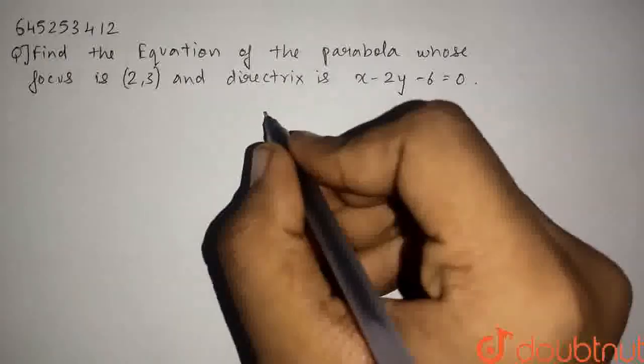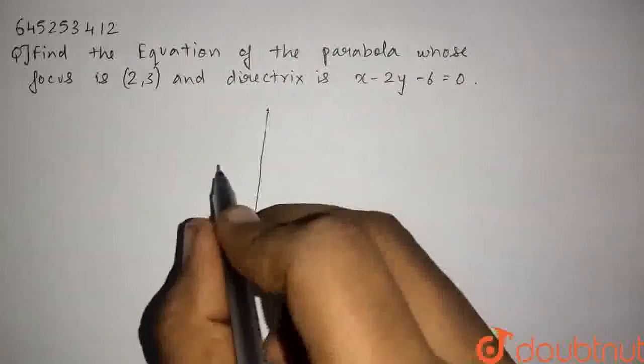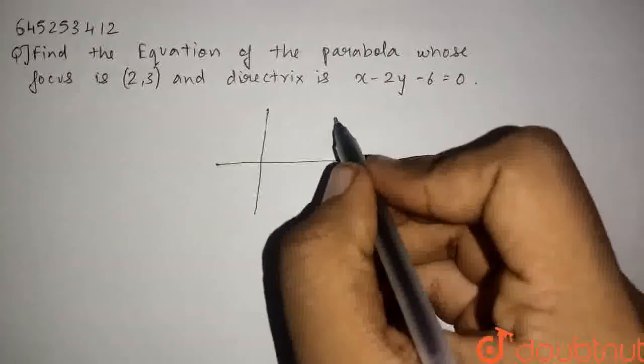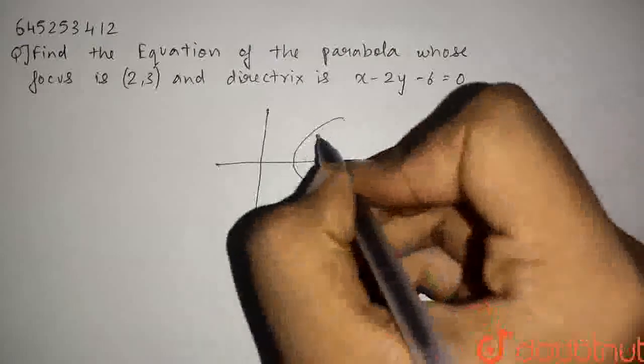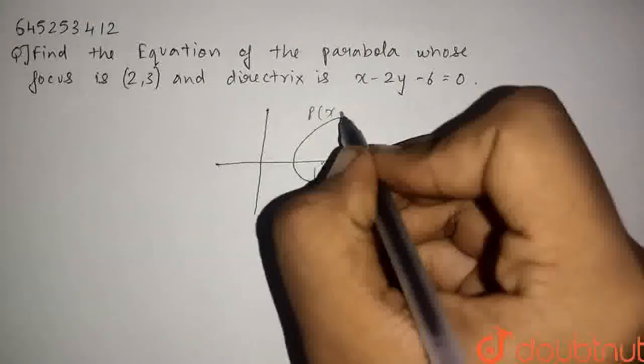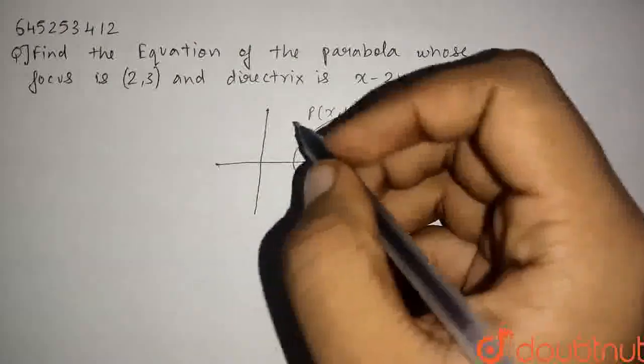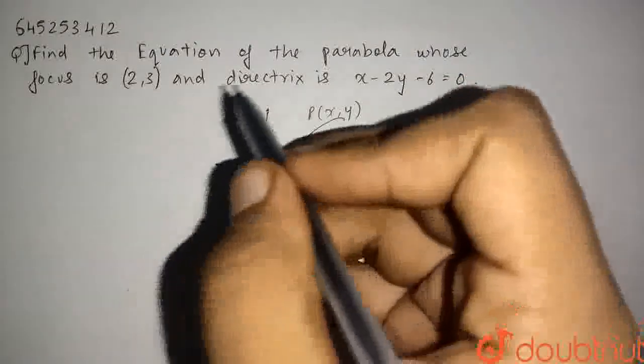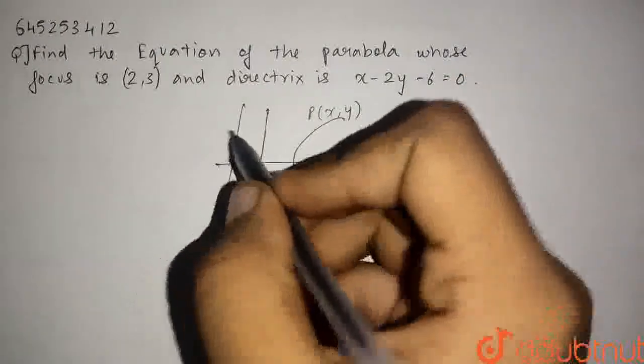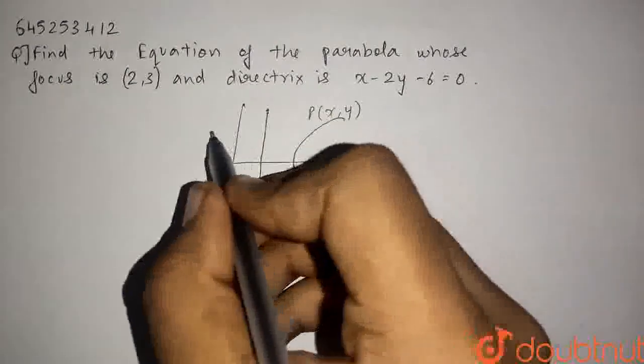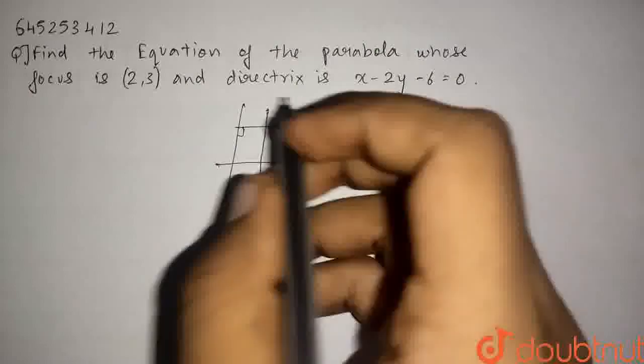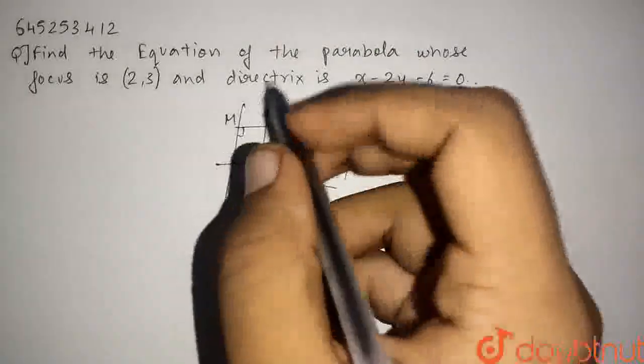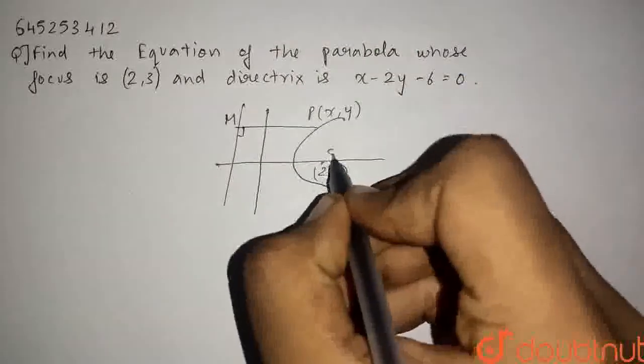For the parabola, I will draw a parabola somewhere here and the focus (2,3) is here. Let P be any point on the parabola whose coordinates are (x,y) and let this be the directrix. This is the directrix and this is the perpendicular distance from the point to the directrix. This is the distance PM.